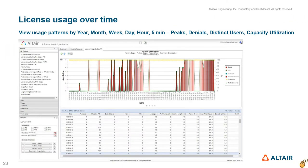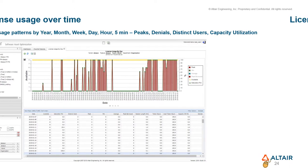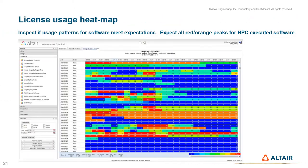License usage reports over time are aggregated by year, month, week, day, hour, and five minutes. There is also a license usage report rendered as a heatmap, which allows quick inspection of usage for different metrics.